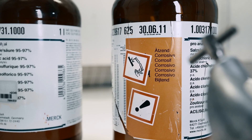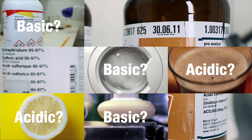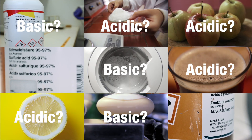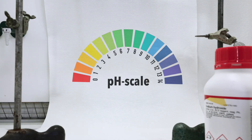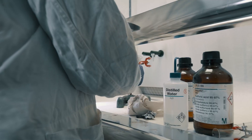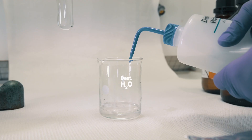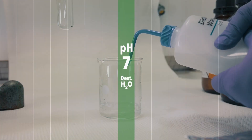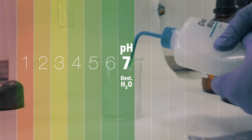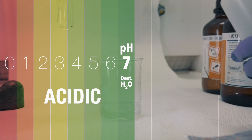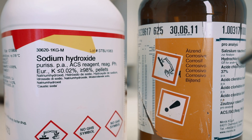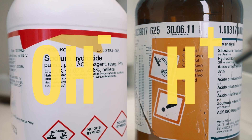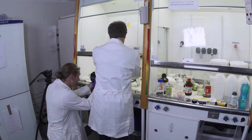So the concentration of different acids and bases can vary. And to know how strong they are, we use a pH scale, which goes from 0 to 14. Distilled water is neutral and right in the middle at pH 7. Under 7 and the solution is acidic, and over 7 the solution is basic.